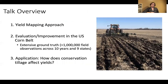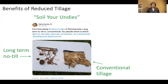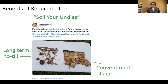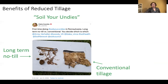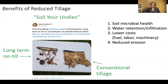Now I want to switch gears and look at an application asking: how does conservation tillage affect yields? Conservation tillage is promoted as part of conservation agriculture. One demonstration of reduced tillage's benefit is the 'Soil Your Undies' campaign, where you bury underwear in fields under different management and see how much remains after a period of time. In a long-term no-till field the underwear almost completely decomposes, whereas in a conventional tillage field it's just dirty. This illustrates benefits including improved soil microbial health, better water retention and infiltration, lower costs for fuel, labor, and machinery, and reduced erosion.